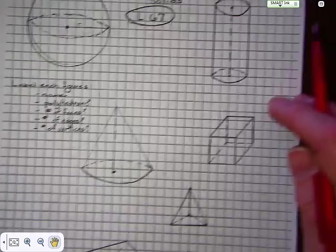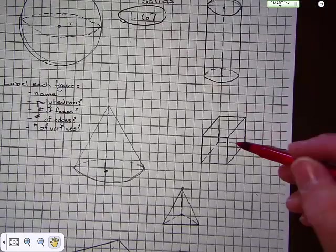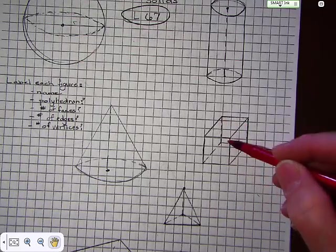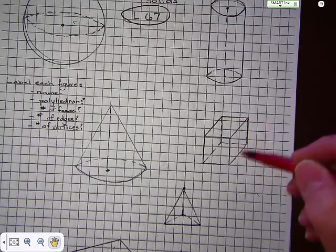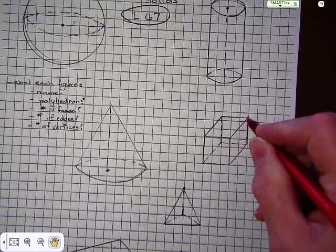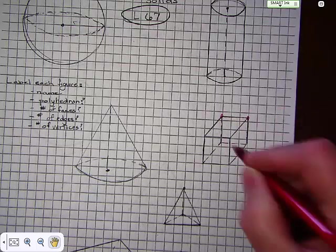This is a cube, or you could even call it a rectangular prism. It does have height, length, width. It has faces. Right here, these would be vertices.